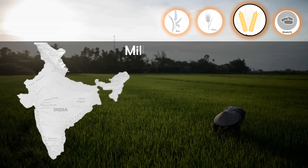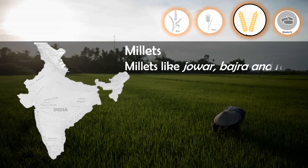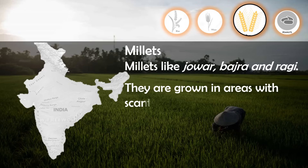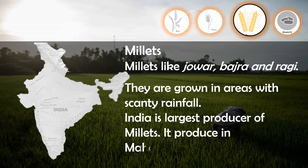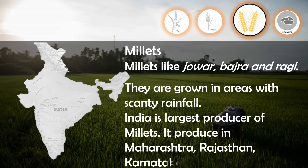Millets like Jowar, Bajra, and Ragi are grown in areas with scanty rainfall. India is the largest producer of millets. They are produced in Maharashtra, Rajasthan, Karnataka, Madhya Pradesh, and Telangana.